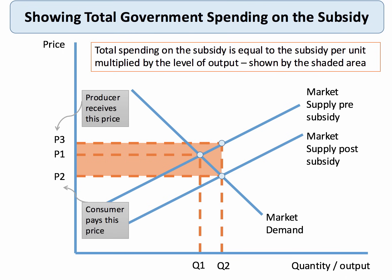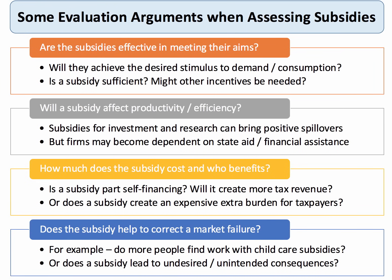A subsidy to a producer lowers their costs and causes an outward shift of market supply. The shaded area in the diagram shows the amount the government spends on the subsidy. The government receives P3 after the subsidy, the consumer pays P2, and the quantity rises to Q2. How can we evaluate subsidies? First, does it meet its aims — how effective are subsidies? For example, if you subsidise childcare, does it actually increase the supply of childcare? If you subsidise free museum entry or student transport, does it achieve the desired stimulus to consumption?